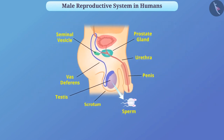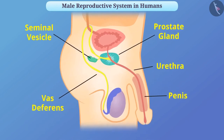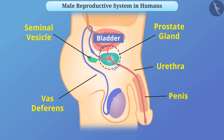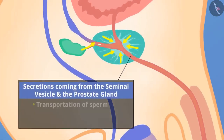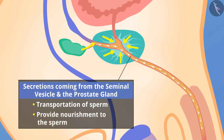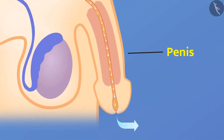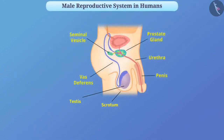Testes also produce a hormone called testosterone which controls sperm production as well as the symptoms of puberty in boys. The transport of sperm is carried by the vas deferens, which joins with the tube coming from the bladder to form a joint tube. The secretions from the seminal vesicle and the prostate gland provide a fluid medium for the transportation of sperm and also provide nourishment to the sperm. The penis transports the secretion to the female reproductive organ.